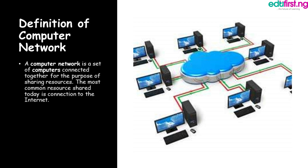A computer network is a set of computers connected together for the purpose of sharing resources. When connected, they are able to share data and internet connection. Networking makes life very easy — you can share the same internet with two or three friends. This can be done wirelessly or with wires.